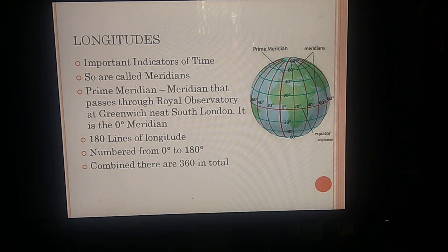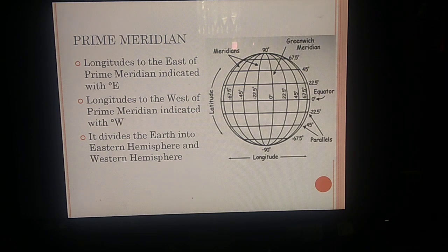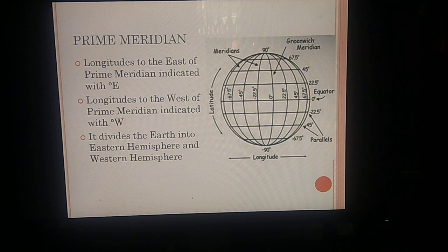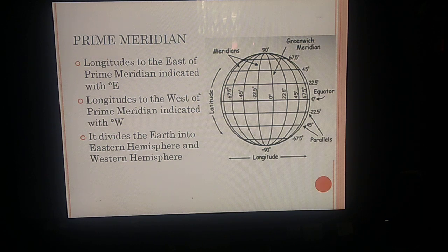There are a total of 360 longitudes in all. Longitudes to the east of the prime meridian are indicated with degree East, and longitudes to the west of the prime meridian are indicated with degree West. The prime meridian is zero degrees and it divides the earth into two parts: the eastern hemisphere and the western hemisphere.